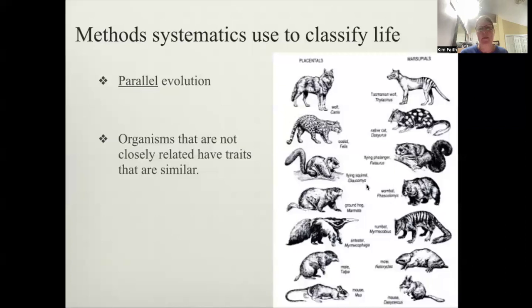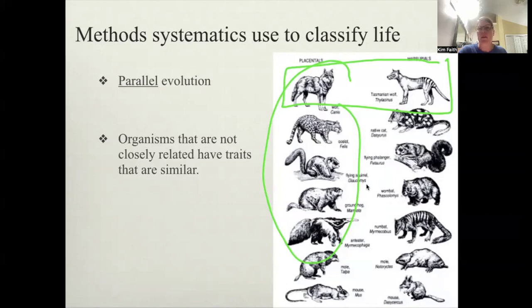We also have something called parallel evolution. And that's organisms that are not closely related, but have similar traits. And we've kind of talked about the difference between placental mammals and our marsupials. And you can see how each of these have very similar counterparts because they develop traits that help them in a very similar environment. So most of these would be like other continents other than Australia. Australia marsupials did very well. Those organisms survived versus the rest of the world where placental mammals out-competed the marsupials.